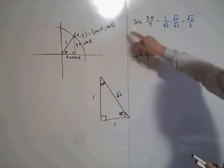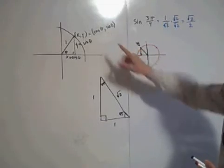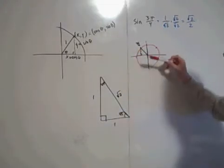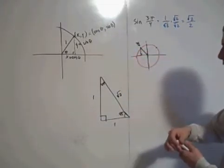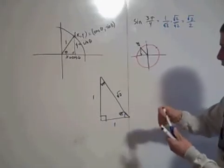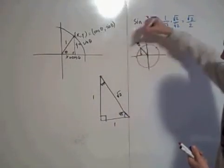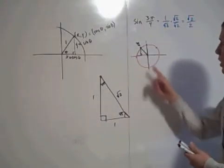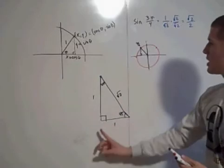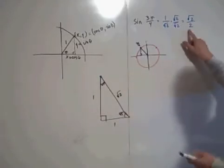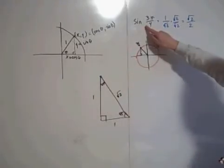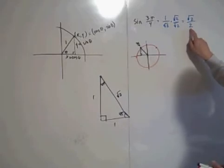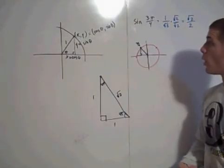Now, the sine corresponds to a y value, and then you have to think about this. Is your y value, in this case, positive or negative? So here, this point corresponds to this point. So is that point, is the y value of that point positive or negative? Well, we went in the negative x direction and in the positive y direction, so this is positive. So the sine of 3π/4 is the square root of 2 over 2.